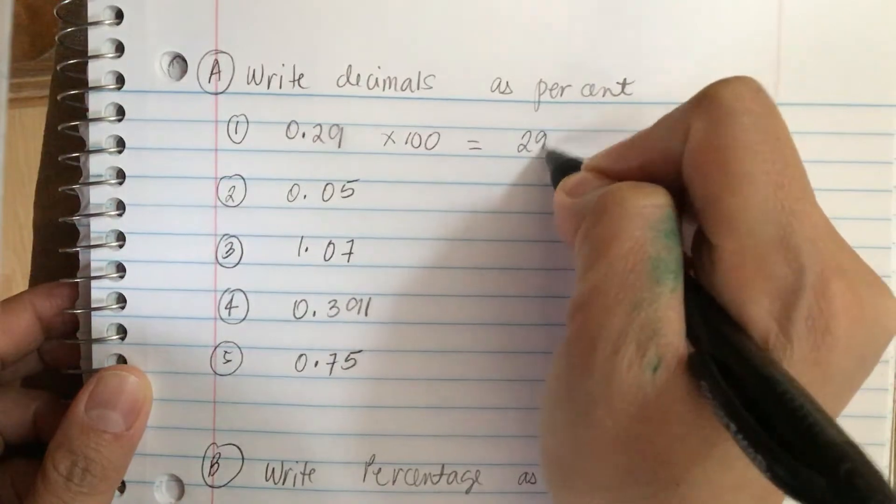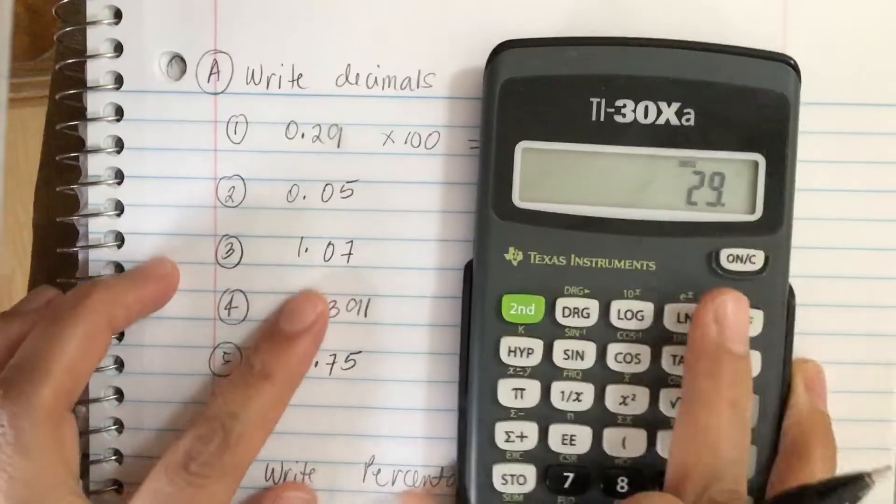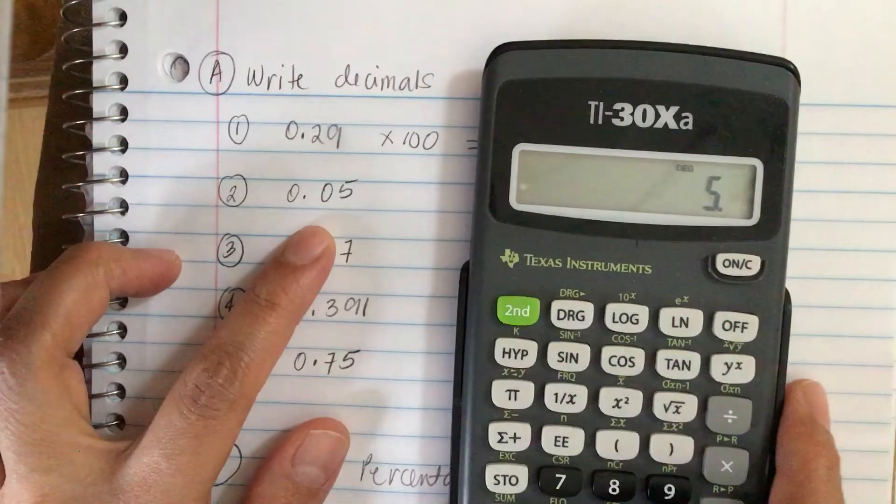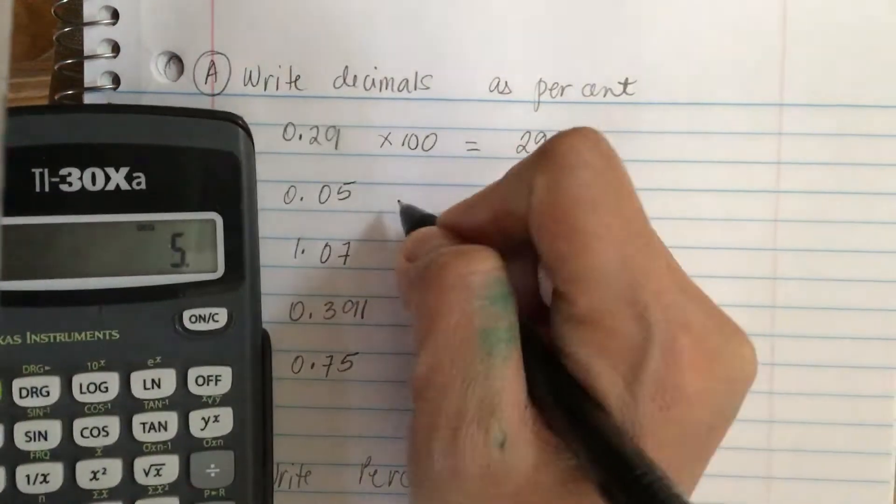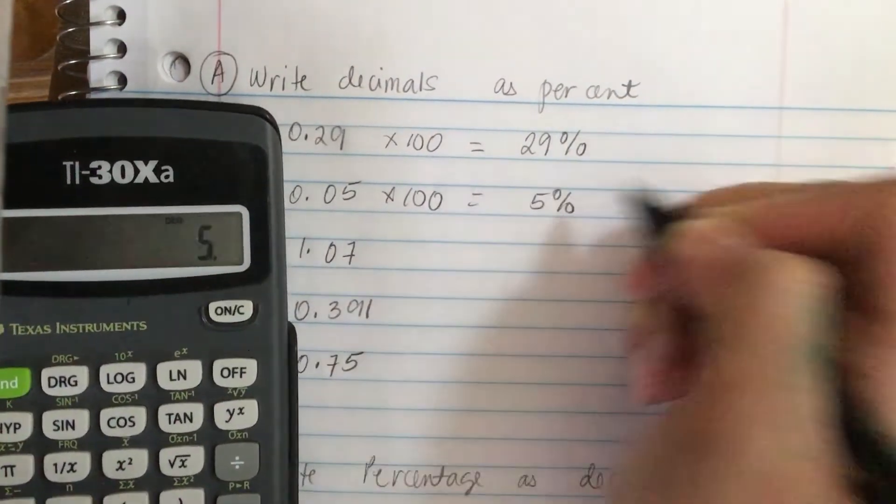So we have 29 percent. Next one, we have 0.05 times 100 and we get 5 percent. So we multiply by 100 and we get 5 percent.